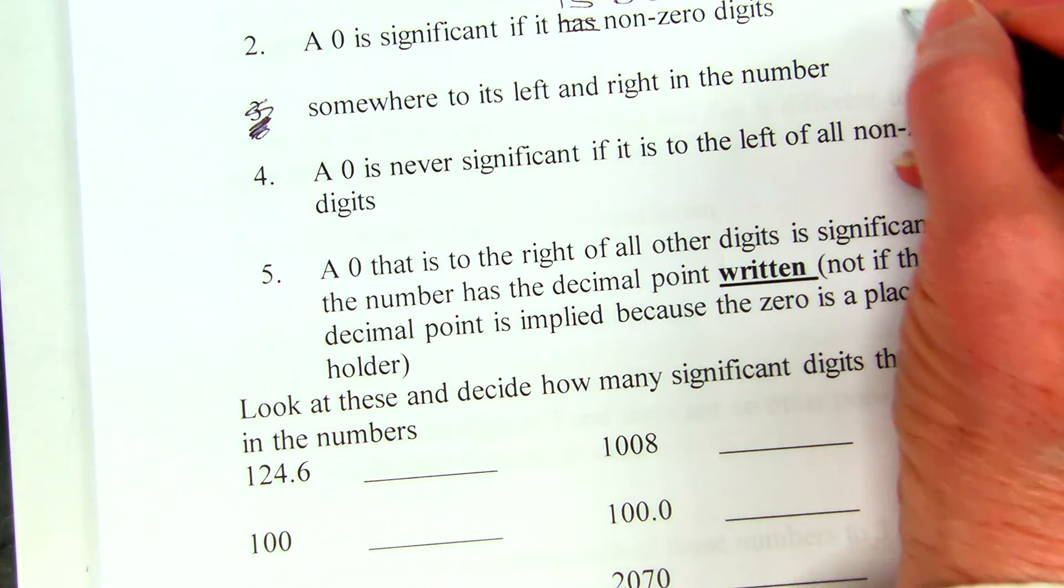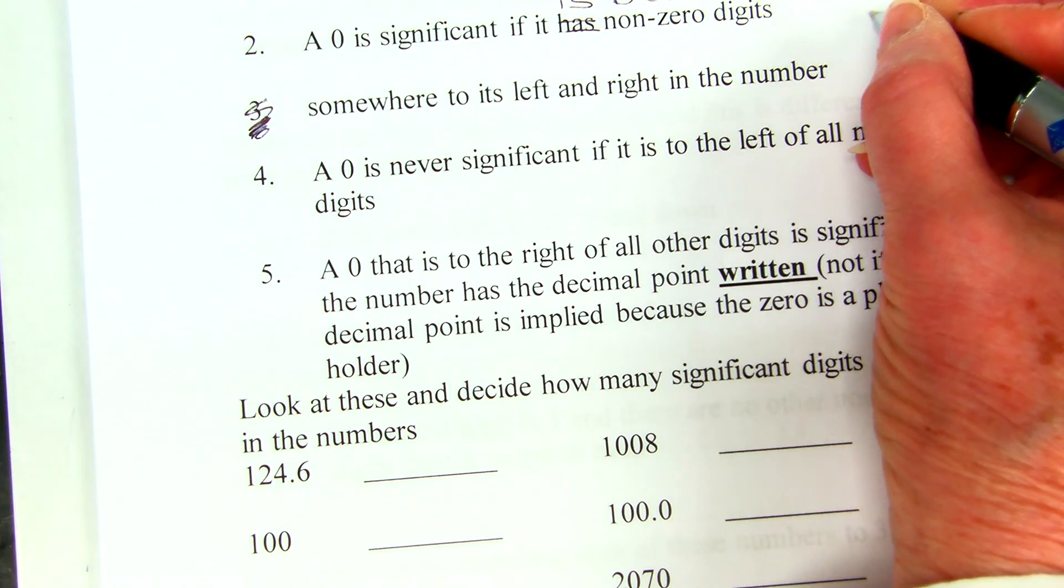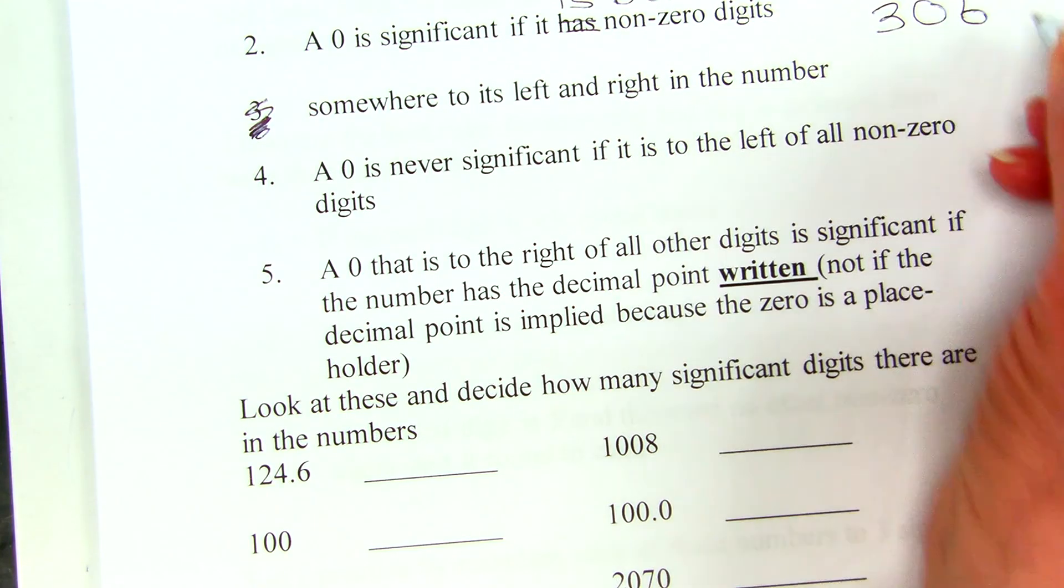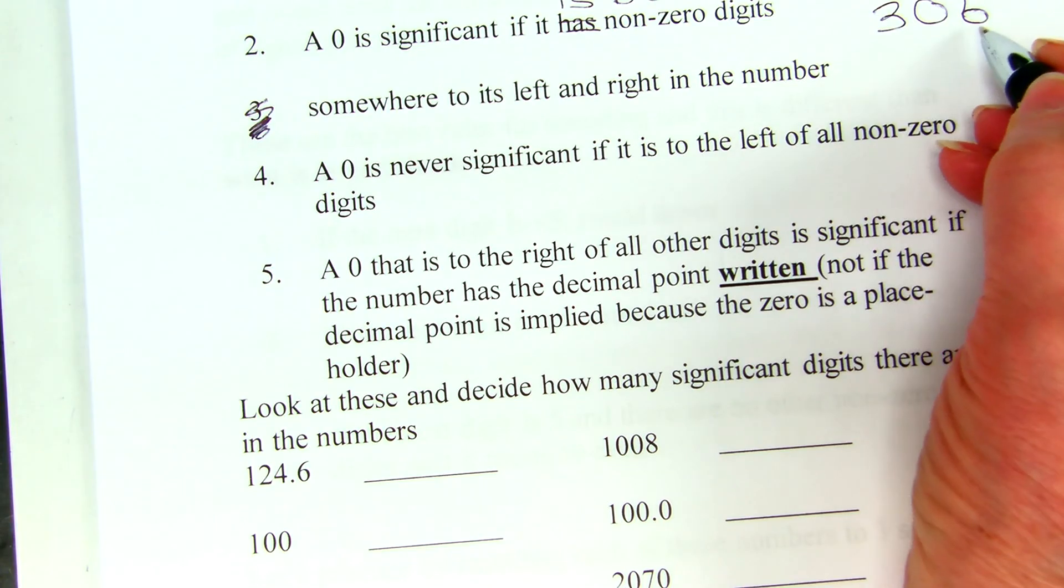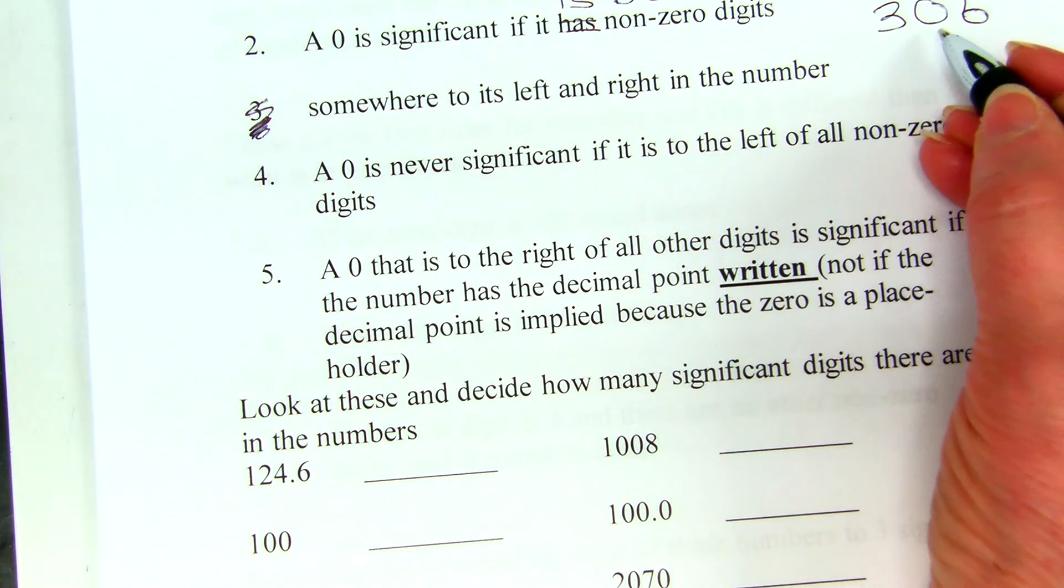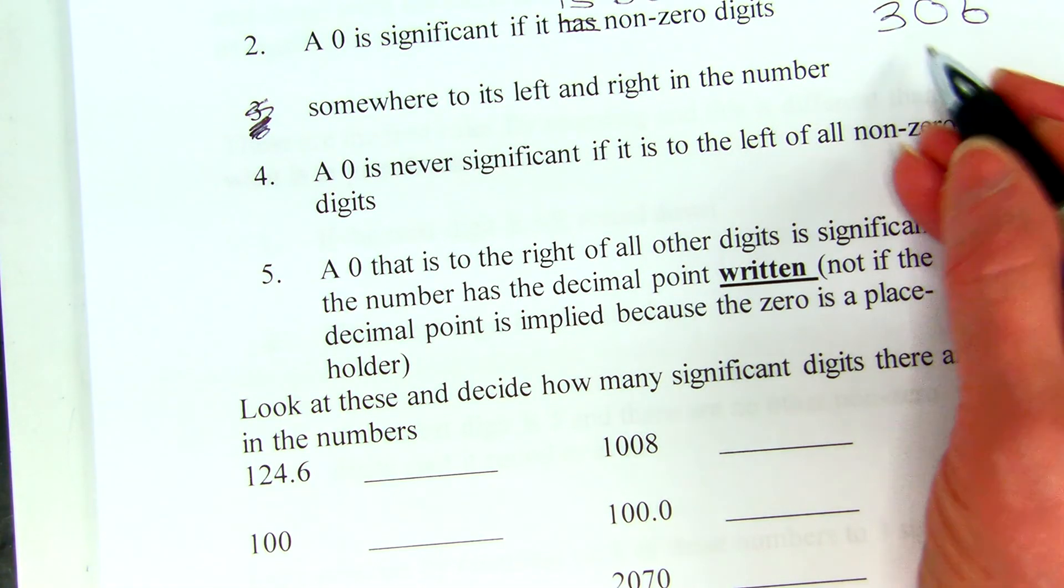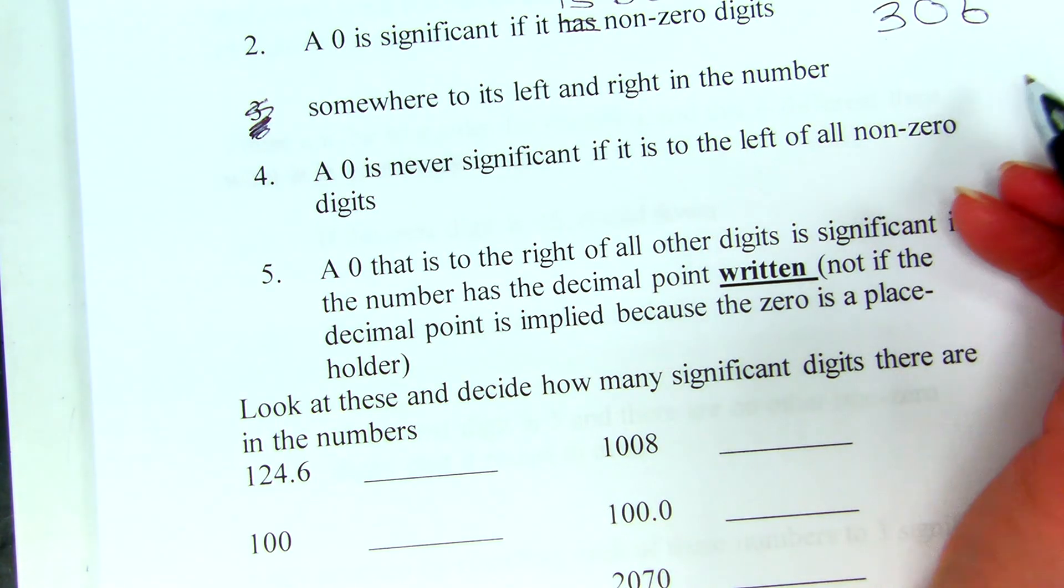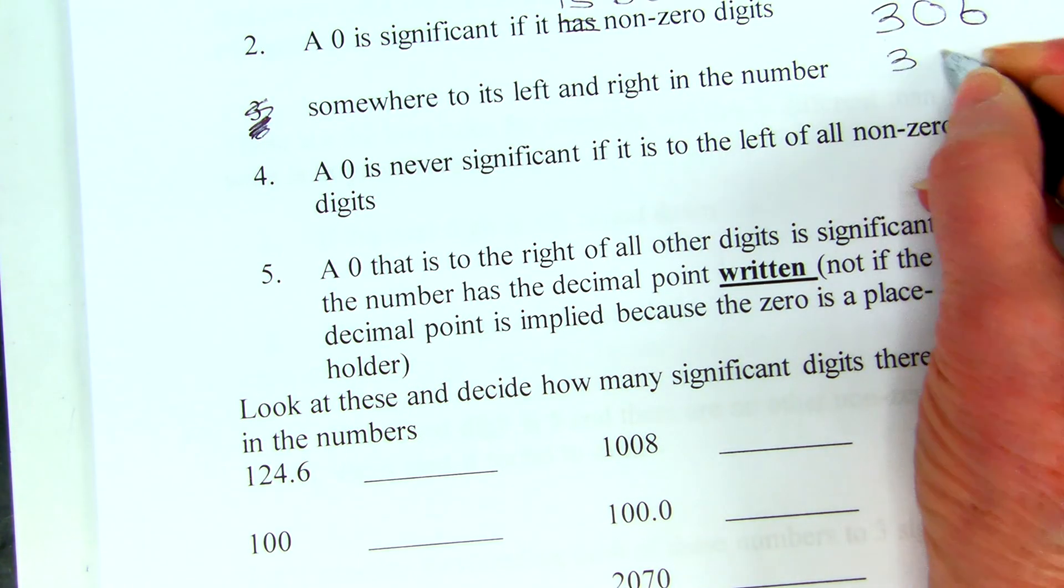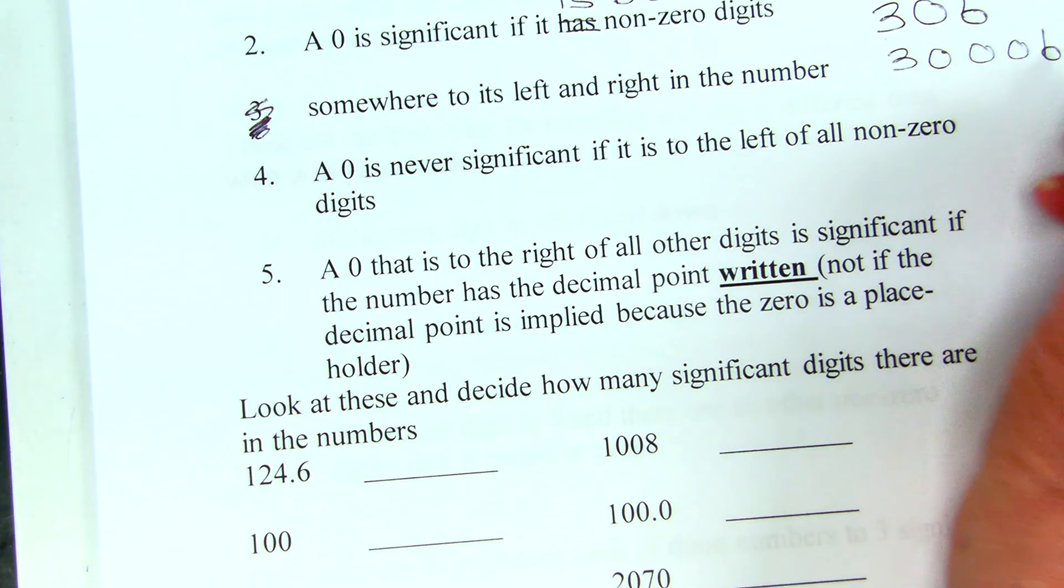So, what that means is if you have something like 306, this zero has a three to the left and a six to the right. And so, it is a significant digit. Or if it has a non-zero digit somewhere to its left and right, that was wrapped around.